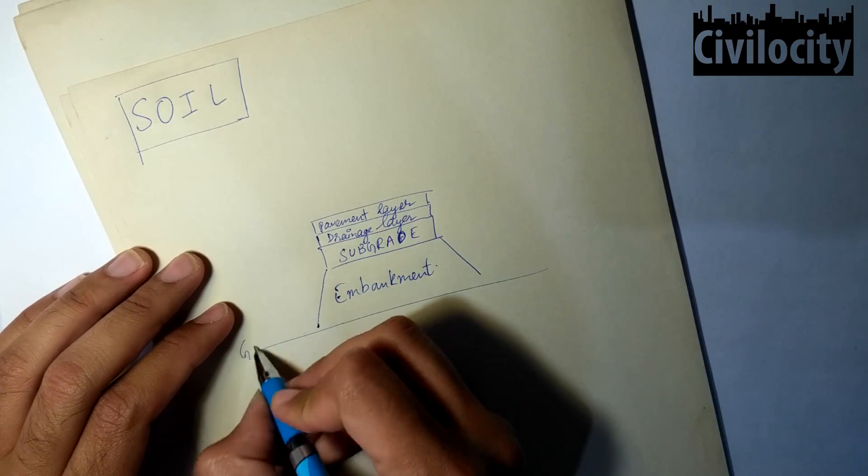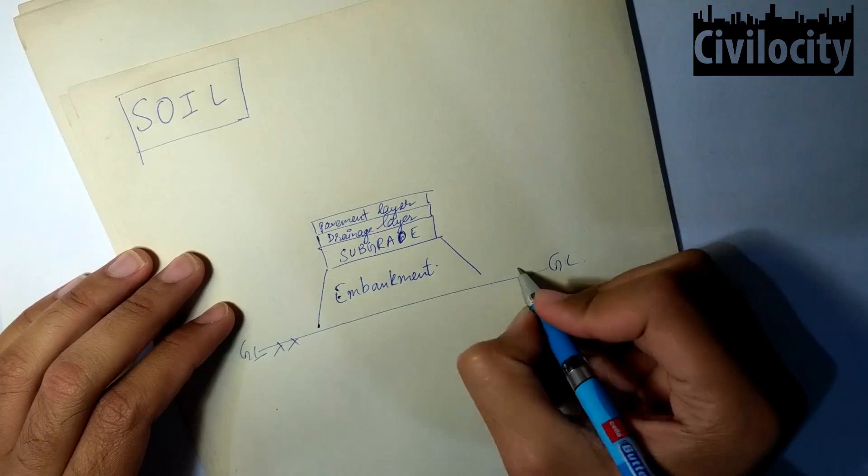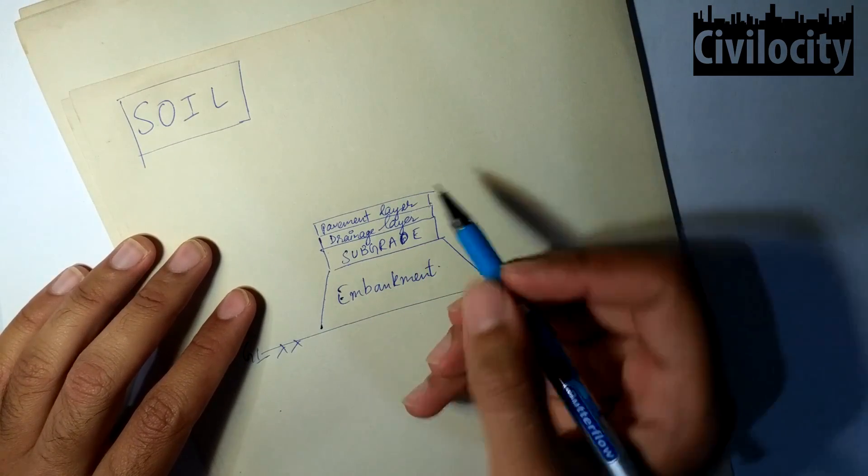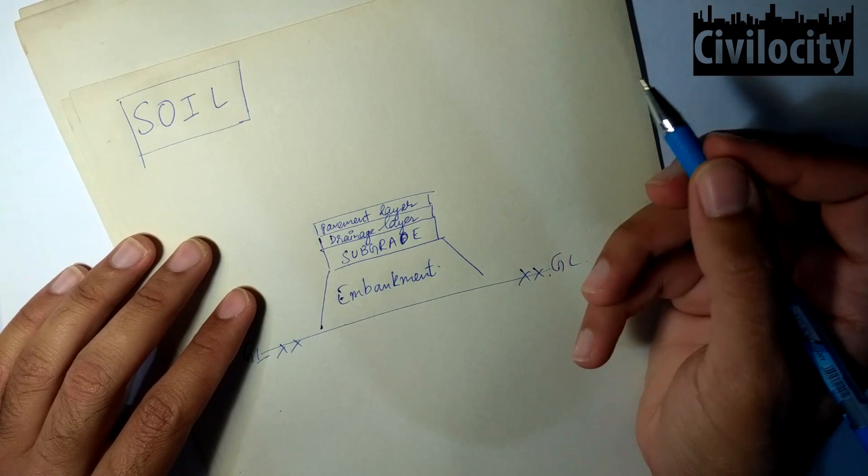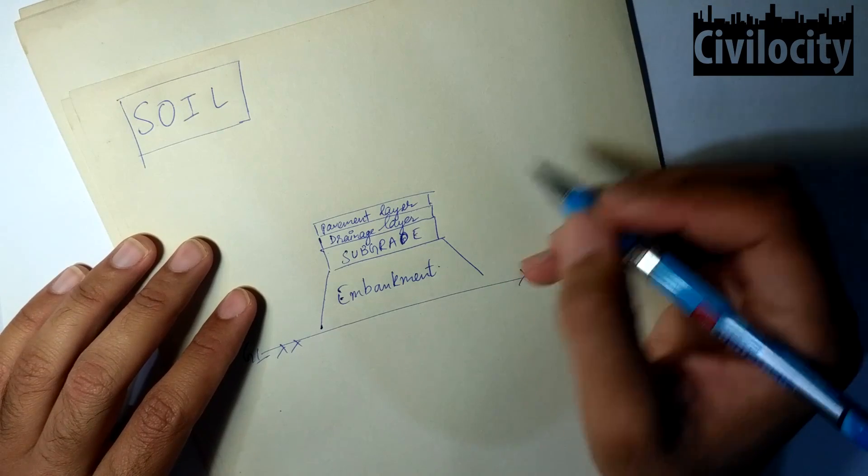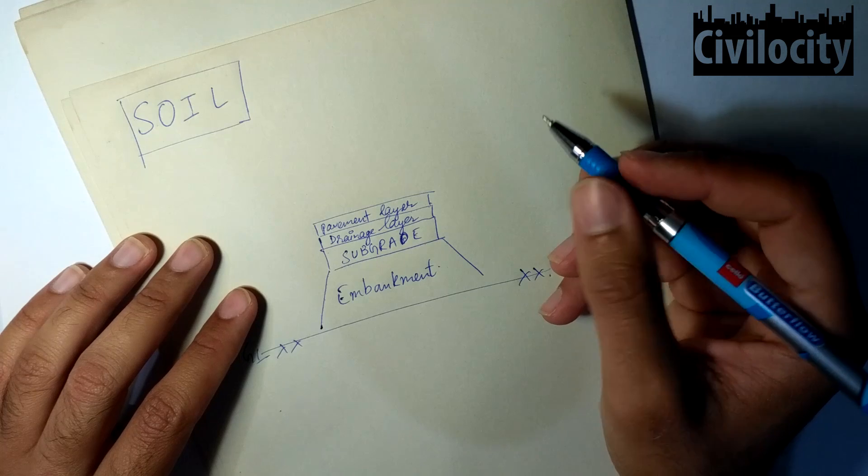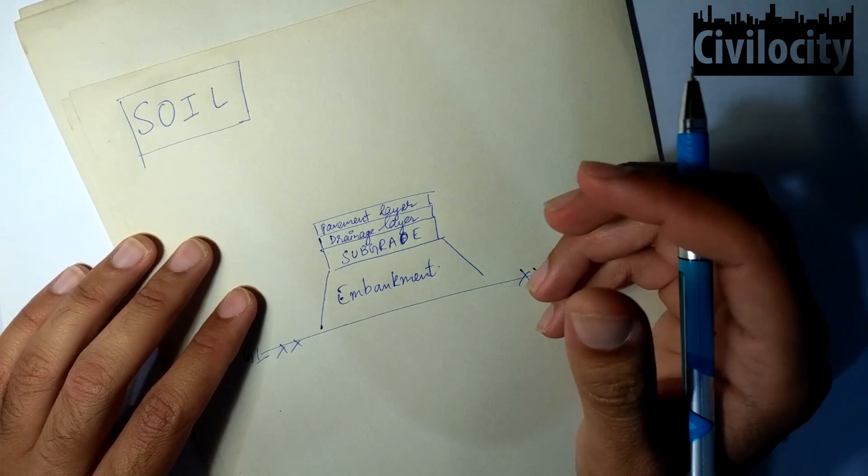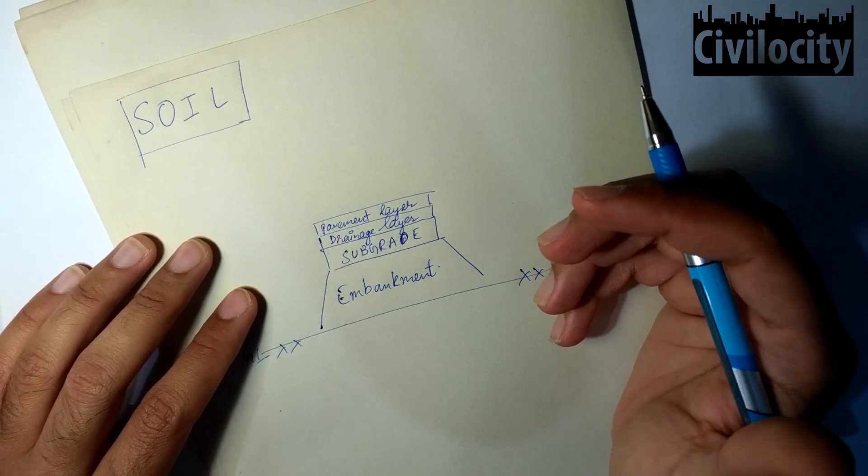This is our ground level, GL. The drawing is just for an idea. Pavements are basically of two types: the first one is flexible and the second one is rigid. Flexible pavements are bituminous pavements, and rigid pavements are cement concrete pavements made up of cement concrete slabs.